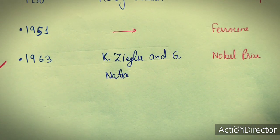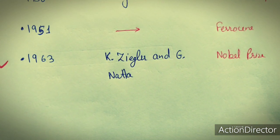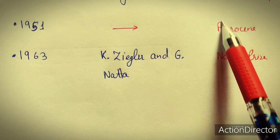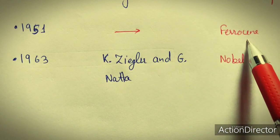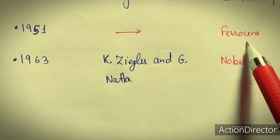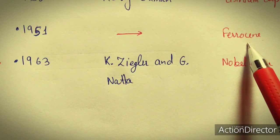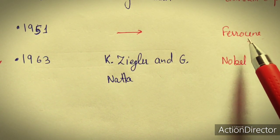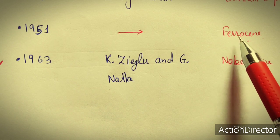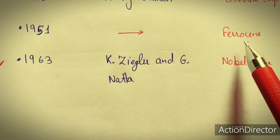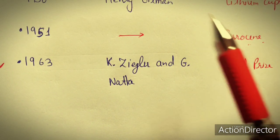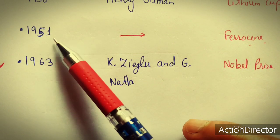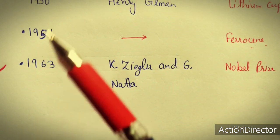Then in 1951, an important organometallic compound — ferrocene — was discovered. It is a sandwich compound consisting of two cyclopentadienyl rings sandwiching iron.